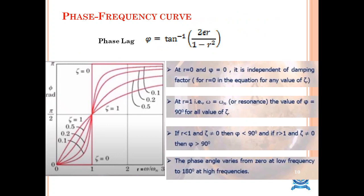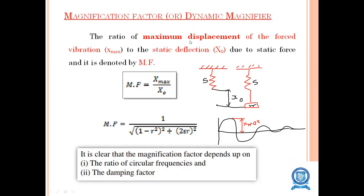The magnification factor (MF), also called the dynamic magnifier, is the ratio of maximum displacement of the forced vibration to the static deflection due to the static force, denoted as MF equals x_max by x naught. The MF value equals 1 divided by root of [(1 minus r²)² plus (2ηr)²]. It is clear that the magnification factor depends on the ratio of circular frequencies and the damping factor.